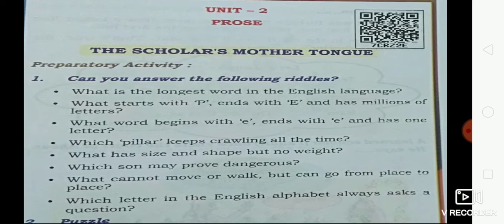Sixth one: which sun may prove dangerous? Write down 'poison' — P-O-I-S-O-N. Poison, because the last three letters S-O-N are pronounced as 'sun', and poison is very dangerous. Last but not least: what cannot move or walk but can go from place to place? Write down 'road' — R-O-A-D.